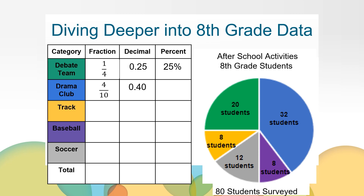Let's look at track. Eight out of 80 students participate in track. I can divide the numerator and denominator by eight eighths or one whole to simplify. The fraction eight eightieths is equivalent to one tenth. I can write one tenth as one in the tenths place — one tenth or ten hundredths — and this value is equivalent to 10%. Since track and baseball have the same number of students, they also represent the same percent. Each category has 10% of eighth grade student participation.